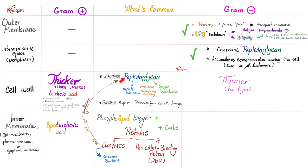Why call it peptidoglycan? Peptido because it has peptide side chains. Glycan because the backbone is made of sugar — carbohydrate. The link between the sugar backbone and the peptide side chains is called transpeptidase cross-linking. The function of peptidoglycan is to provide rigid support for the bacteria and to protect it from osmotic damage.